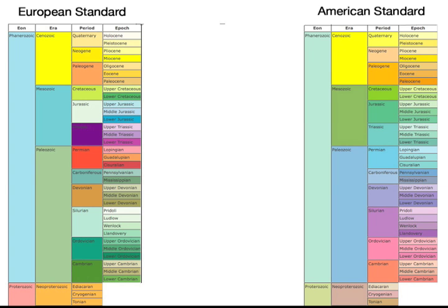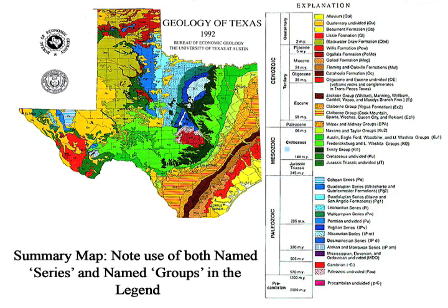Two standards have been proposed: one by the United States Geological Survey, the other by the European International Geologic Association. Expositions of stratigraphy are almost always accompanied by a map, a columnar section, or both.